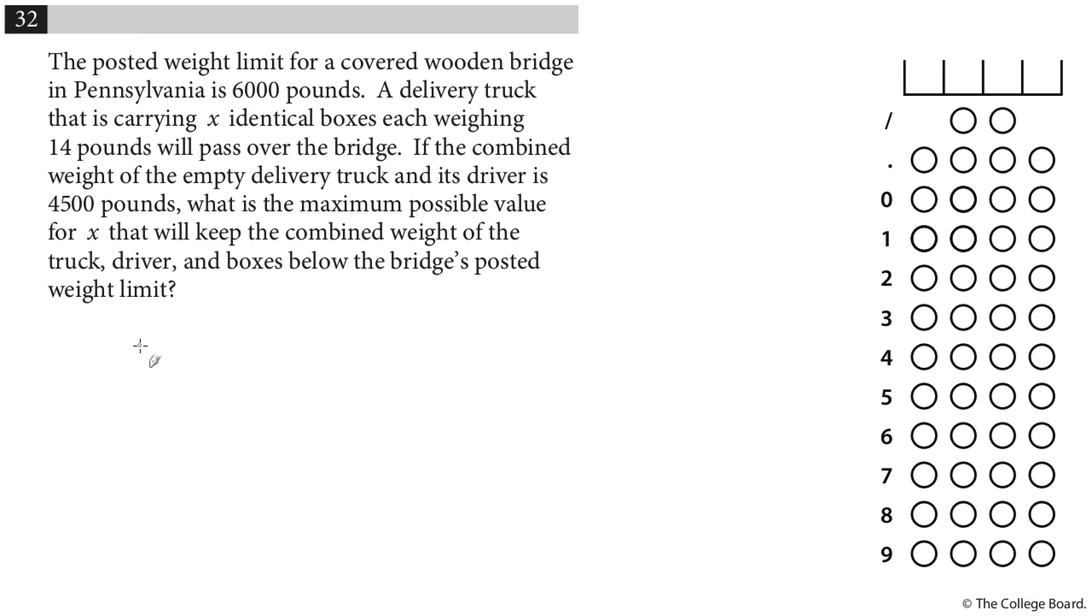So in here, this is basically a little inequality. I have a maximum, I have this right here, so I know that whatever my weight is, it has to be less than or equal to 6,000, or else I could break that bridge and fall right down into the river. Now, what makes up my weight? A couple of things. I have the truck and the driver, so that's 4,500, and then I also have all the boxes. I don't know how many I have, but each box weighs 14 pounds, so I will add 14 times the number of boxes, 14X.